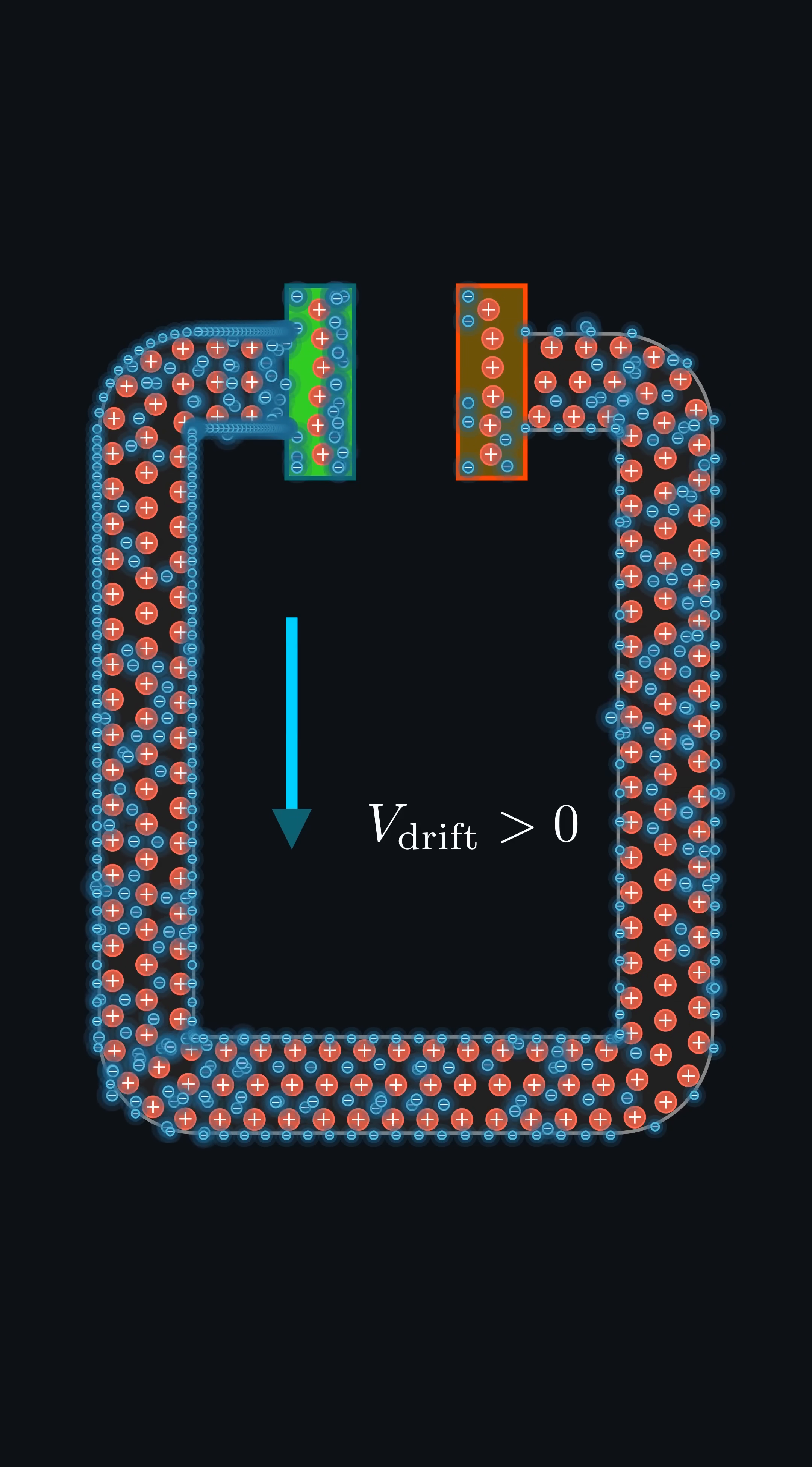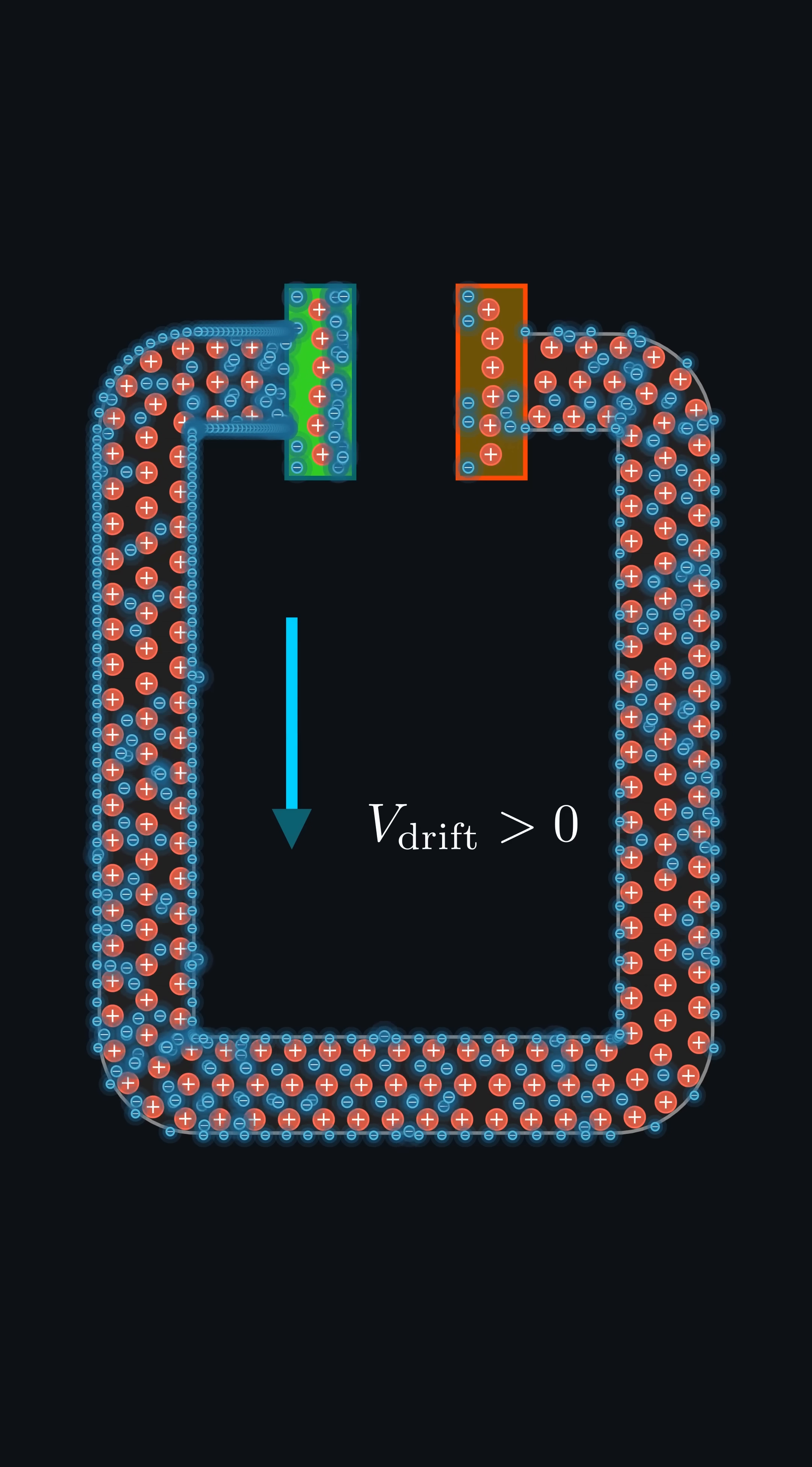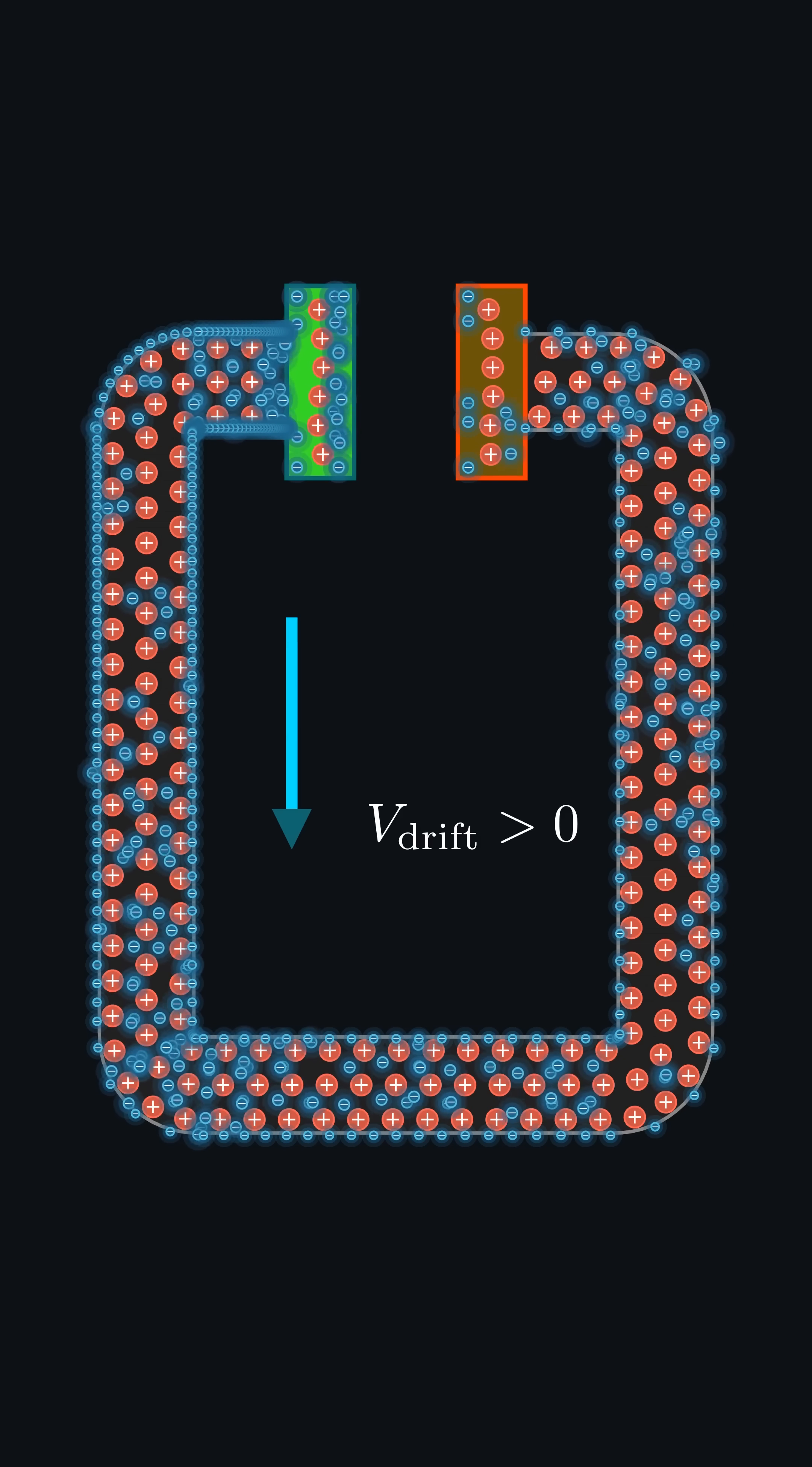But here's the problem. Once balance is reached, the drift stops. No field, no motion, no current. If we want the flow to continue, we need something to keep those plates forever unbalanced.